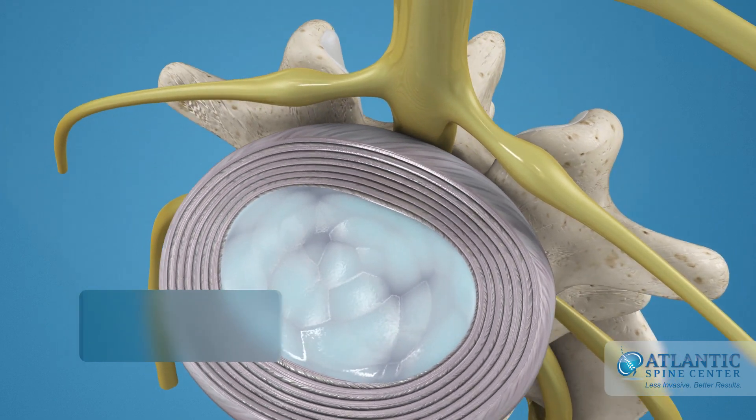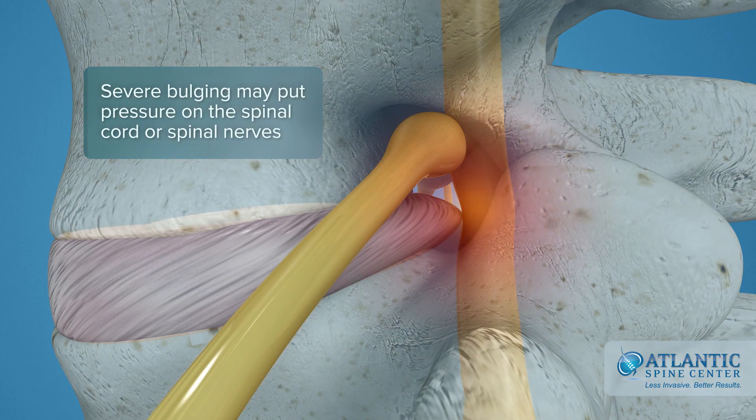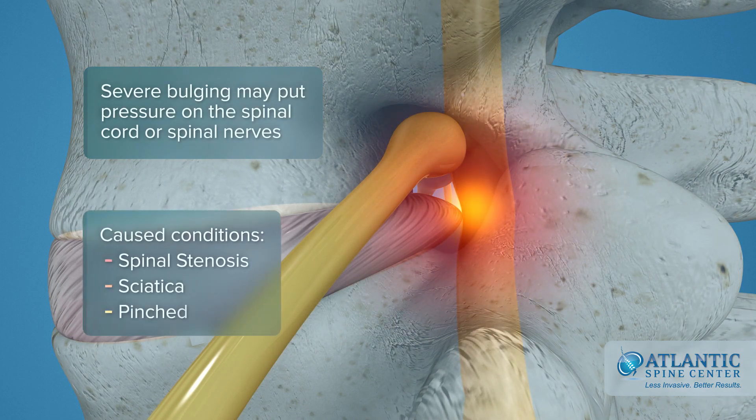Severe bulging may put pressure on the spinal cord or spinal nerves, causing conditions like spinal stenosis, sciatica, or a pinched nerve.